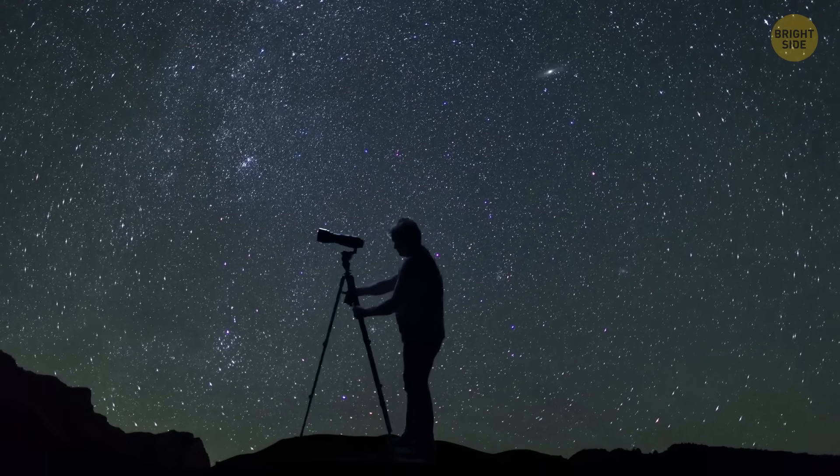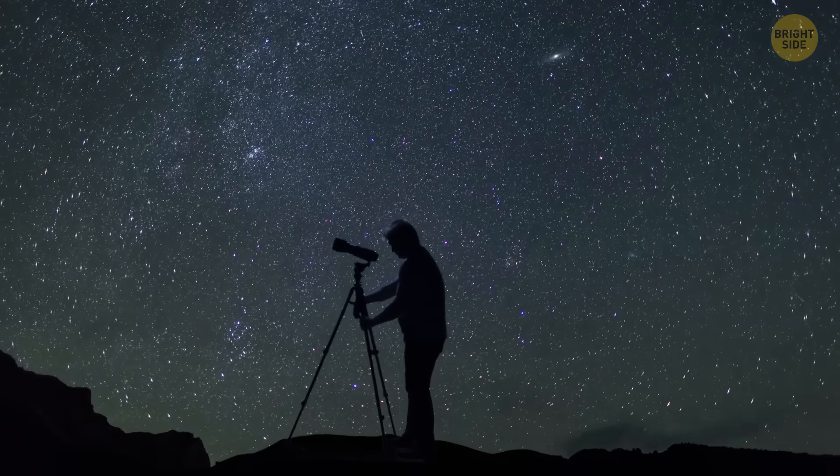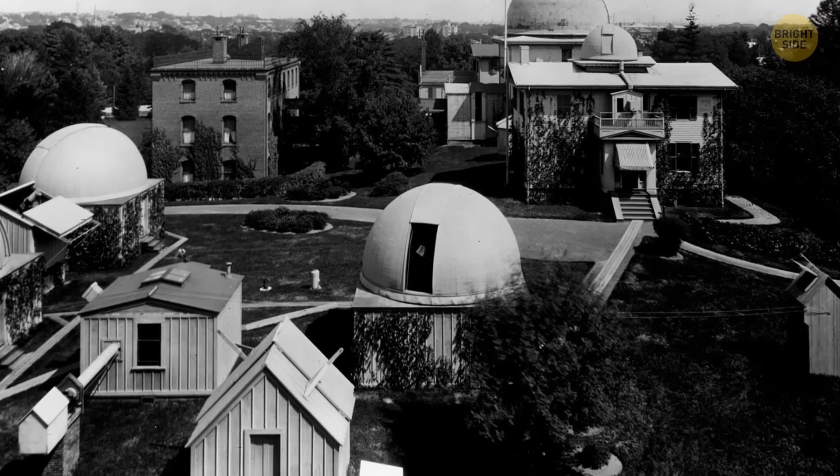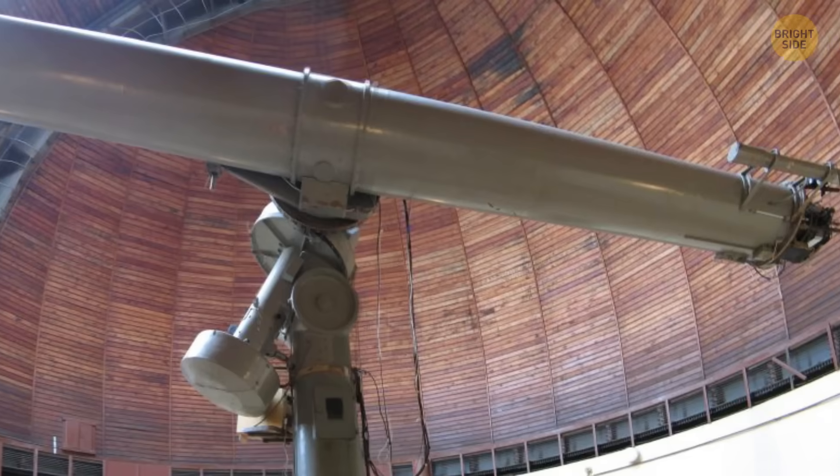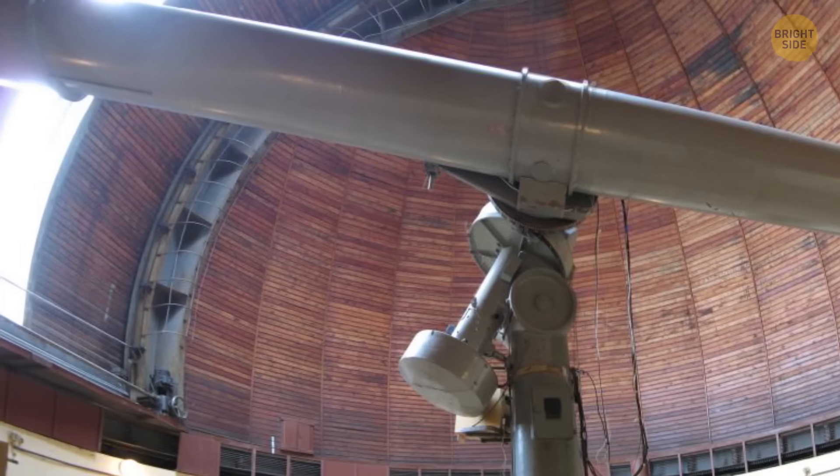Vega was also the first star to get photographed, other than the sun, of course. To do it, astronomers at Harvard College Observatory used a 15-inch refractor, and it happened in 1850.